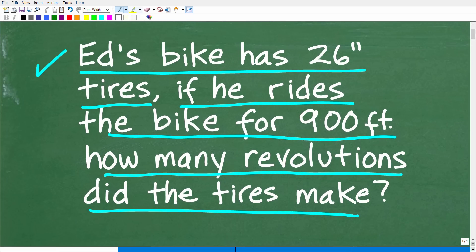All right, so one more time before I show you the answer. Ed has this bike with 26-inch tires. In other words, the diameter or width of the tires is 26 inches. And of course, he's going to ride this bike for 900 feet. How many revolutions, in other words, how many times do the tires turn?